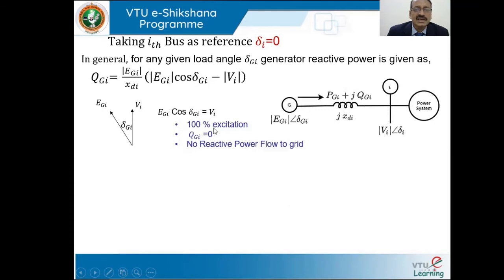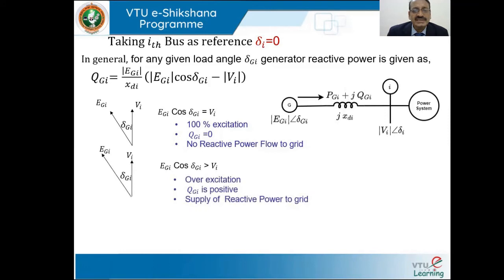When EGi × cos(delta_Gi) equals Vi, this condition is called 100% excitation, where QGi equals zero and no reactive power flows to the grid — this corresponds to unity power factor operation by the generator. When we overexcite the generator, EGi magnitude is greater than Vi, so EGi × cos(delta_Gi) is greater than Vi. This is overexcitation, and QGi becomes positive, meaning the generator is supplying reactive power to the grid.